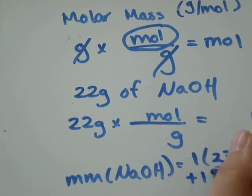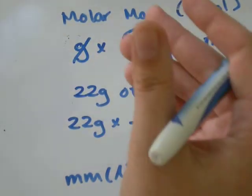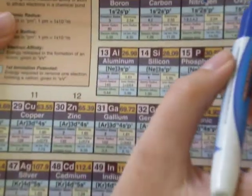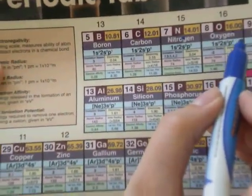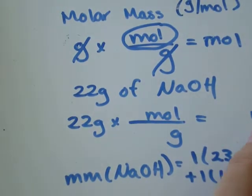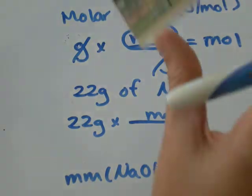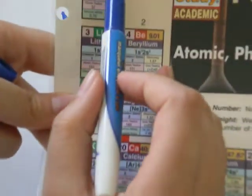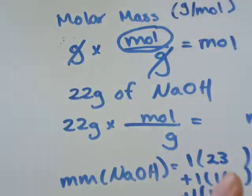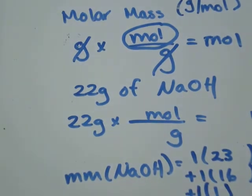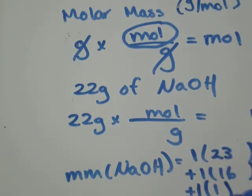Oxygen has a weight of 16, plus one hydrogen, and hydrogen has a weight of 1. Right there. Okay. So we'll just go with 23 plus 16 plus 1, which equals 40. So the molar mass of NaOH is 40 grams per mole.